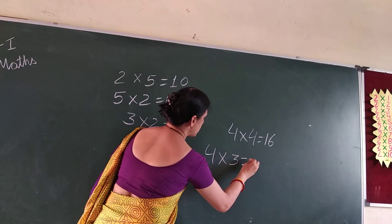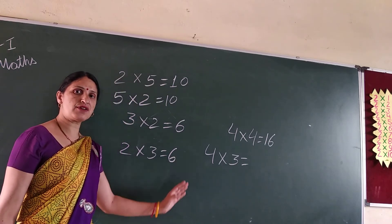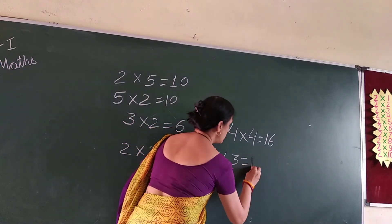Next, four 3's are. Let's recite: four 1's are 4. Four 2's are 8. Four 3's are 12.